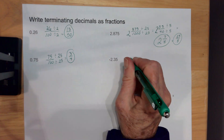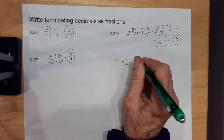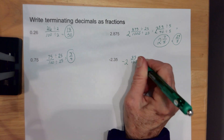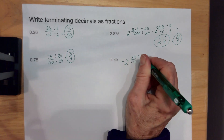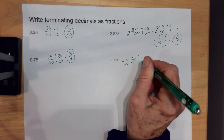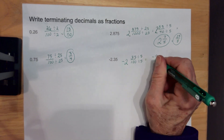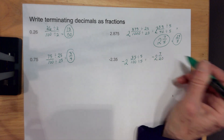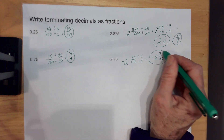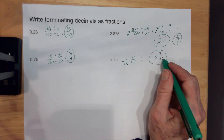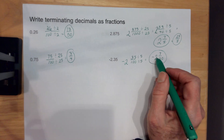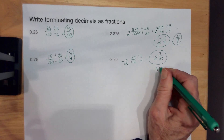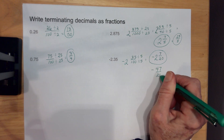This one, I'm going to take the negative 2, and then put 35 over 100. I'm going to divide the top and the bottom by 5, so I get negative 2 and 7 on the top and 20 on the bottom. If I want to make it into an improper fraction, 20 times 2 plus 7 gives me negative 47 over 20.